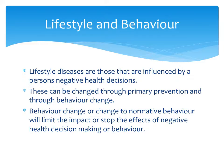Lifestyle and behaviour is another key reason for something being considered a National Health Priority Area. Lifestyle diseases are influenced by a person's negative health decisions, which are strongly linked to their beliefs, values, and attitudes. These conditions are made a priority because they can be changed through primary prevention and behaviour change. Changes to societal norms will limit the impact of negative health decision-making and reduce the burden of these diseases.